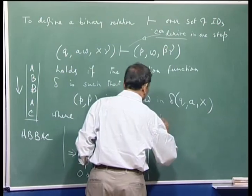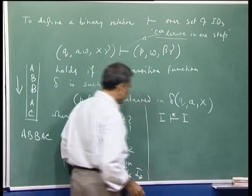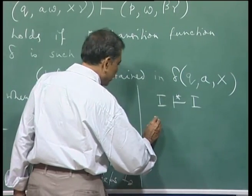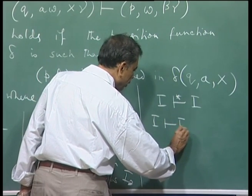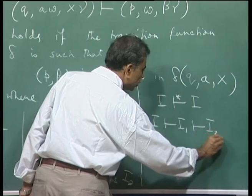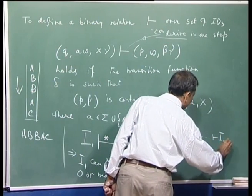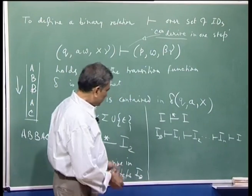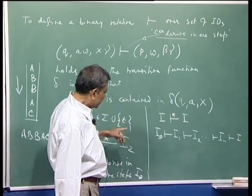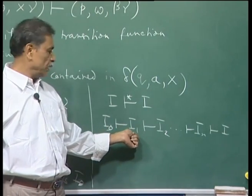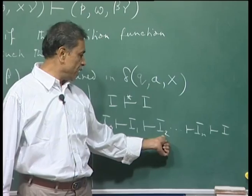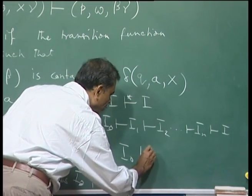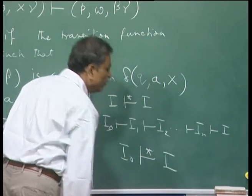In other words, this relation is the reflexive transitive closure of the one-step turnstile relation. For every ID, it holds trivially because in 0 steps you can go from an ID to itself. And if we have a sequence I₀ → I₁ → I₂ → ... → Iₙ, then we can write I₀ derives Iₙ in 0 or more steps.